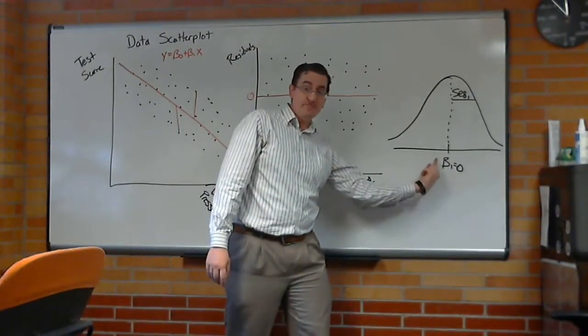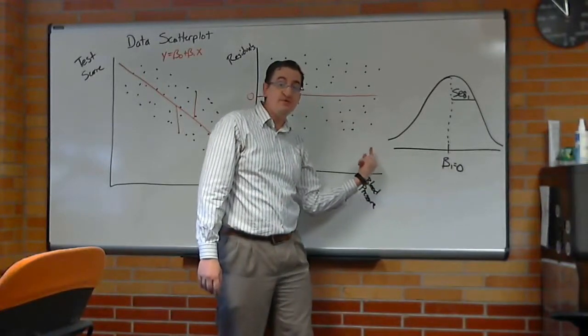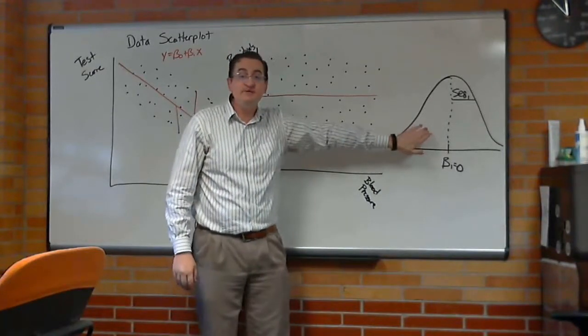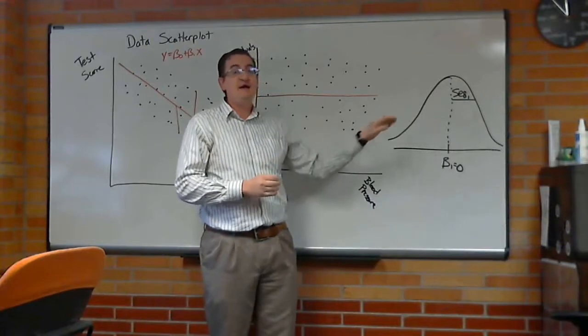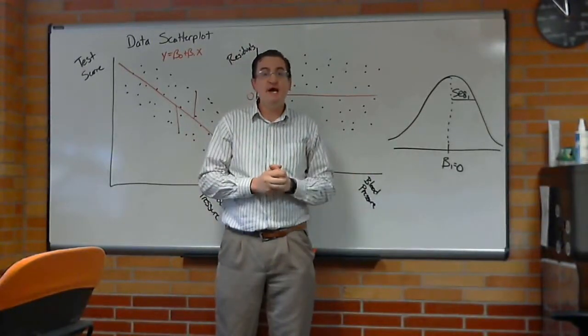A big p-value means you're in close to the null, and so the null is reasonable. A small p-value, you're way out here in the tails, we don't believe that null. This is important because this is the kind of picture you should have seen in the intro class where you do a hypothesis test, and this helps you feel comfortable about where that p-value comes from, and how you interpret it.